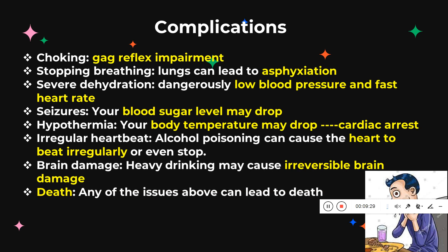One major complication is choking. If a person has alcohol overdose and falls down, vomit can choke their entire system. This impairment — choking of the vomit — can lead to asphyxiation, where they may not be able to breathe properly, and this can lead to death. This is a major complication of alcohol poisoning.